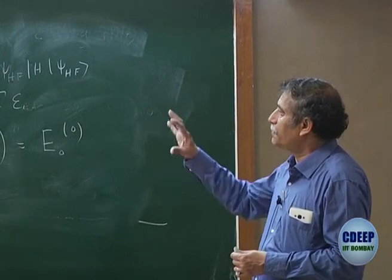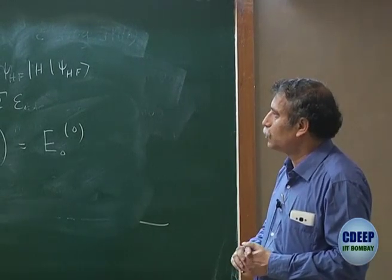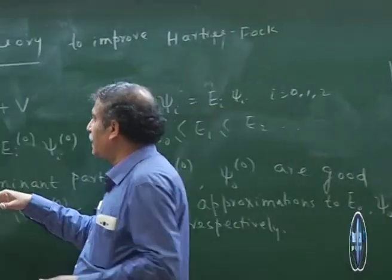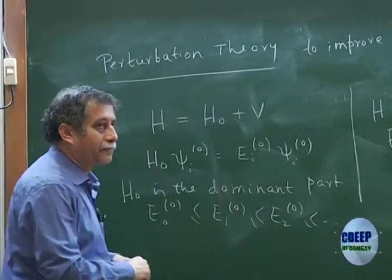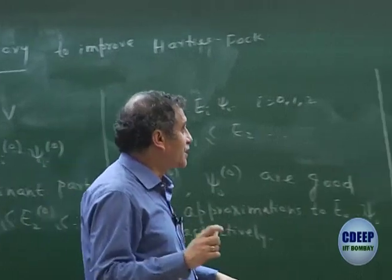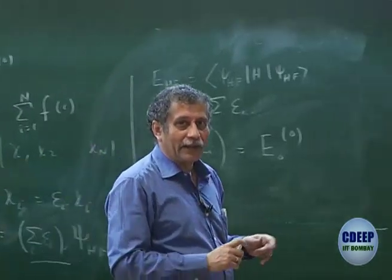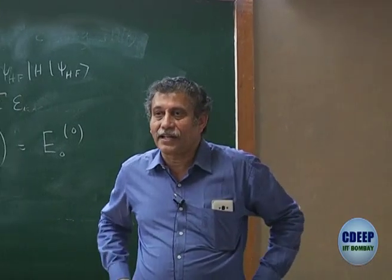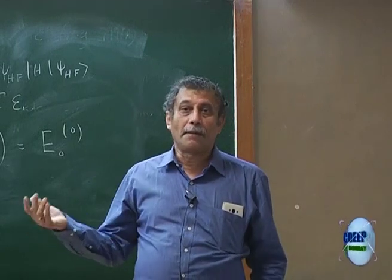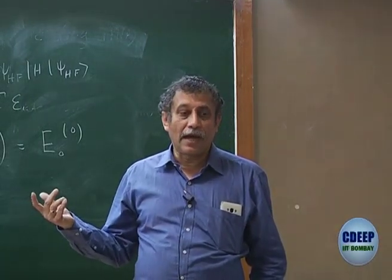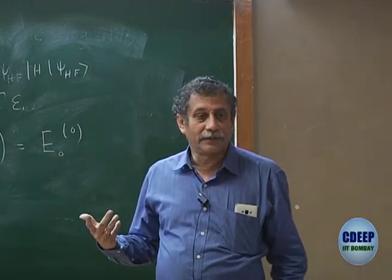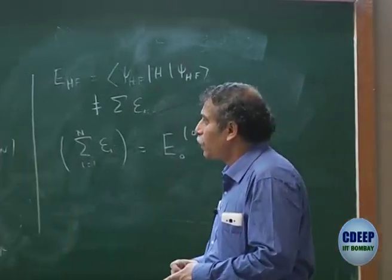So this H₀ becomes a very nice starting point to do a perturbation theory. Of course, I must remind you that there is another very important condition for perturbation theory: I must have a complete solution of H₀, not just a ground state solution. The ground state solution should be a good approximation to the exact ground state, but in addition, all solutions of H₀ must be known. So I have to go back and see whether I know all the solutions of H₀.